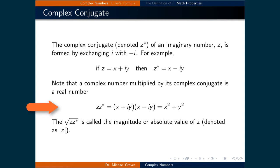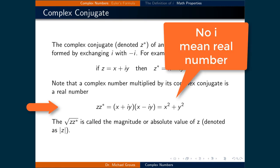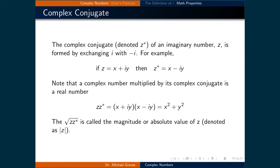For example, z times z star is equal to x plus i times y, all times x minus i times y, and that's equal to x squared plus y squared, which is a real number. The square root of a complex number times its conjugate is called the magnitude, or absolute value of z, and is denoted as z inside two vertical lines.